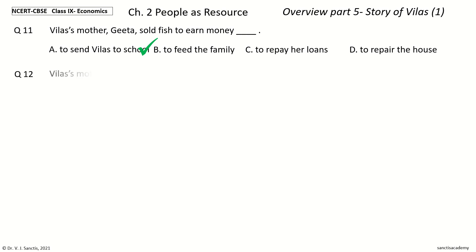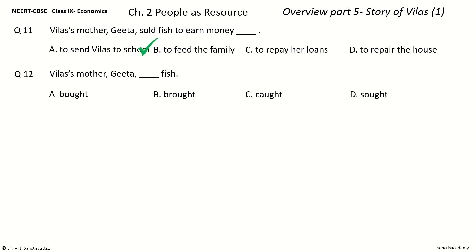Question 12: Vilas's mother Geeta dash fish. The options are: a) Bought, b) Brought, c) Caught, d) Sort. And the answer is Bought. So Vilas's mother Geeta bought fish.